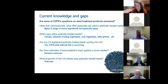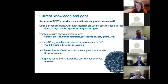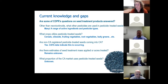Some of our original questions on seed treatment products have been answered. Beyond neonicotinoids, we now know there is a wide range of active ingredients and pesticide types. Crops that utilize pesticide-treated seeds include cereals, oilseeds, root vegetables, and leafy greens. Based on the CDFA inspection data, non-California-registered pesticide-treated seeds are coming into California. However, knowledge gaps remain: for instance, estimates of seed treatment mass applied or acres treated remain unknown, as does the proportion of the California market that uses pesticide-treated seeds.